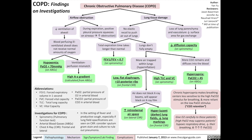The findings on investigations from COPD stem from two main pathophysiological consequences: number one, airflow obstruction, and number two, lung tissue damage. Airflow obstruction results in reduced ventilation of the alveoli, making it so that blood perfusing the poorly ventilated alveoli does not receive normal amounts of oxygen. This results in hypoxemia — a partial pressure of oxygen less than 70 mmHg on arterial blood gas — as well as a ventilation-perfusion mismatch.